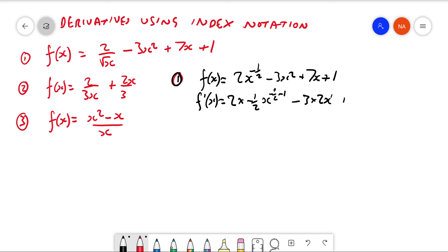Plus 7, and plus 0. When you differentiate any number by itself you get 0. When you differentiate 7x, you just end up with the 7 by itself. Now let's just make this a little bit simpler.